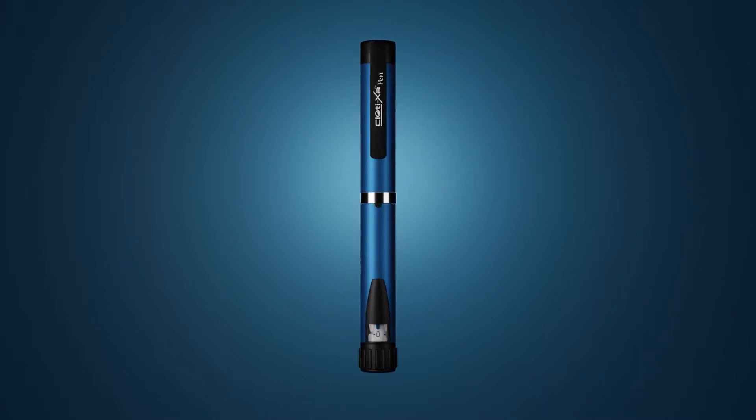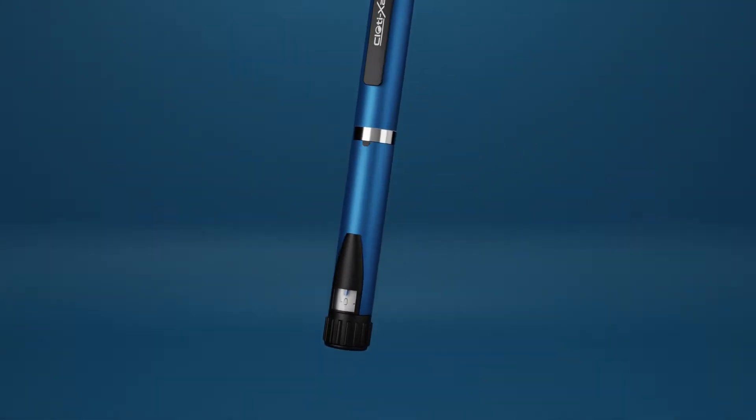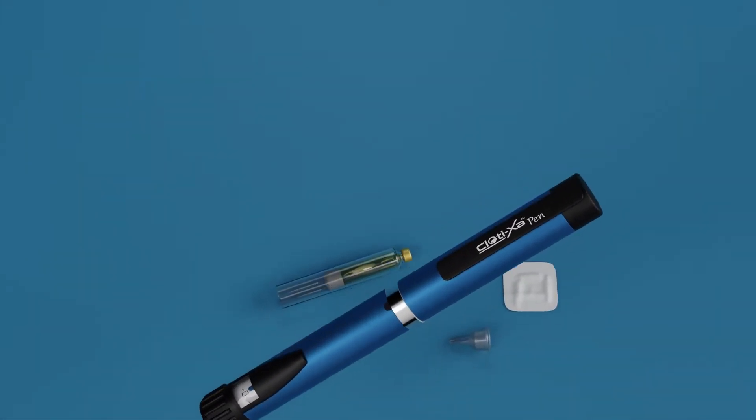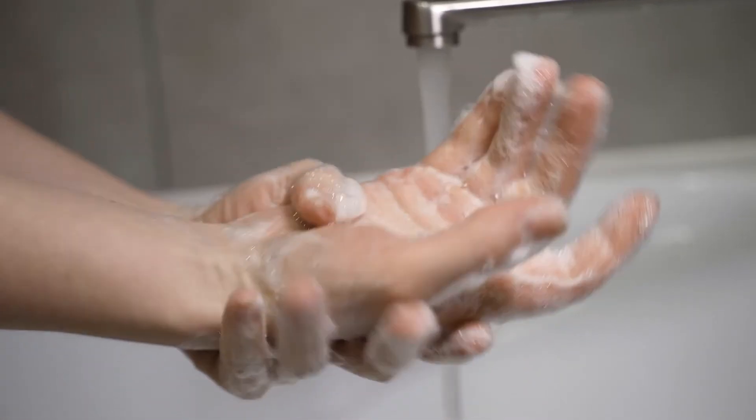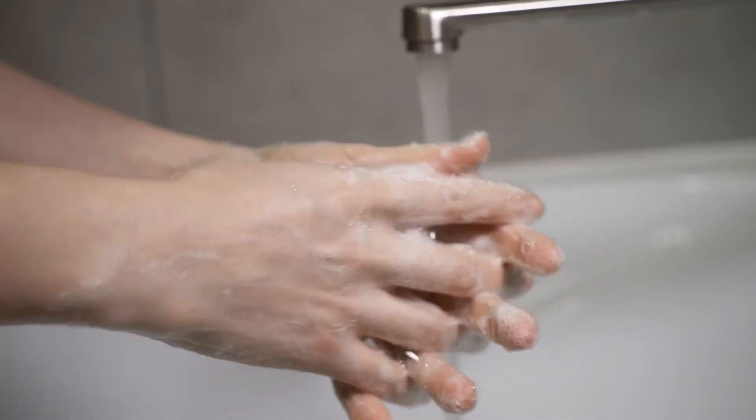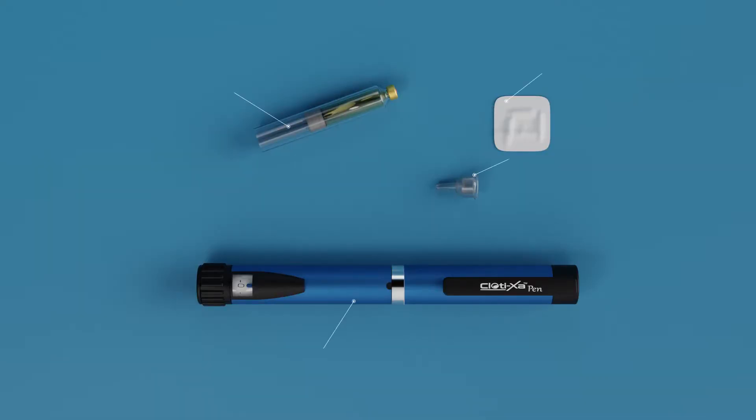Now, let us understand step by step the ways of self-injecting the injection Clotixapen. Before preparing to inject yourself, clean your hands thoroughly with soap or hand sanitizer. Please ensure that you have Clotixapen, Clotixapen cartridge, needle, and an alcohol swab with you.